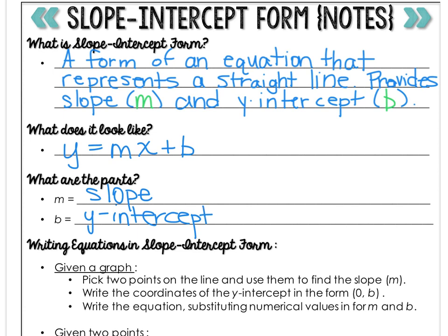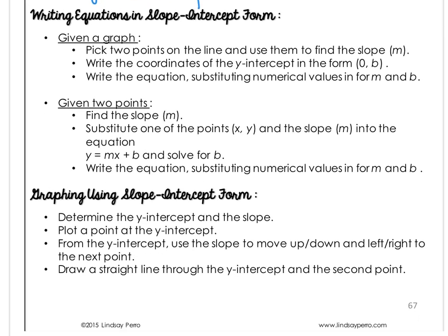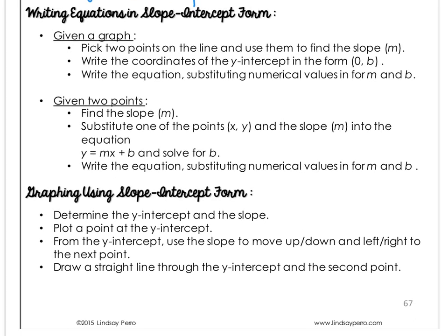To write an equation in slope-intercept form from a graph: pick two points on the line, just as we did when finding slope, and use those two points to find the slope — that becomes your M. Then write the coordinates of the Y-intercept in the form (0, B) by finding where the line crosses the Y-axis. Finally, write the equation substituting the values in for M and B.